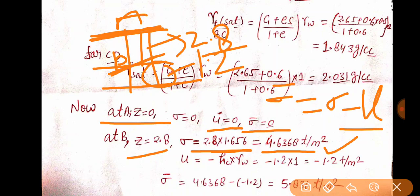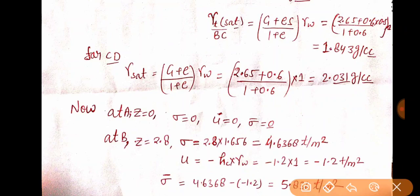Generally you might think: sir, why would effective stress be affected in this portion? But it will be affected. Why? Because the negative effect — water below the water table has a positive effect, but if water is being pulled up due to capillary effect, it will have a negative effect. So pore water pressure in this portion will have a negative effect: U = −hc × γw = −1.2 × 1 = −1.2 ton per meter square. That's the important point — negative sign is used here. So sigma bar = sigma − U = 4.6368 − (−1.2) = 5.836 ton per meter square.